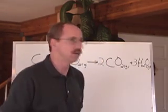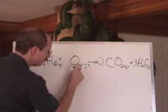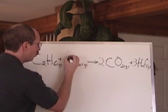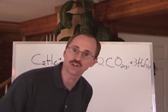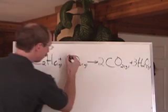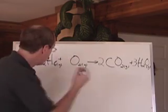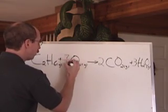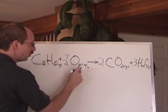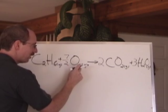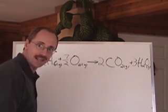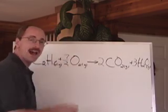What times two equals seven? Well, three and a half times two is seven. You can put three and a half in front here. You could also put seven over two. Seven over two times two, the two's cancel and you're left with seven. That's another way of writing three and a half.